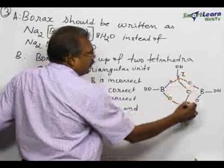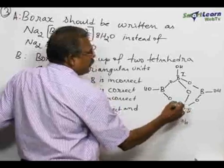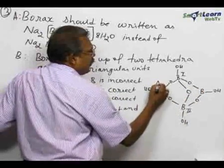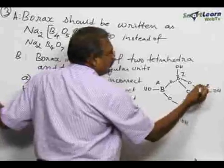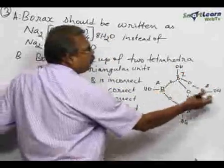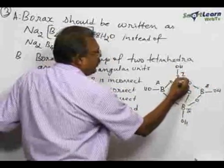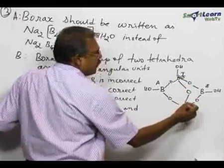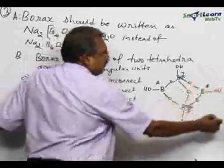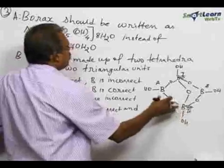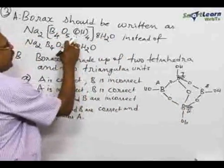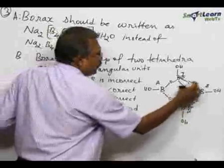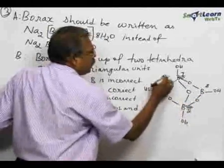So this is the first tetrahedral unit, the second tetrahedral unit and these other two are triangular unit, this triangular unit A and triangular unit B. So two tetrahedra and two triangles and this B is having the negative charge B minus, this is also having negative charge and this the entire thing is coming under what is called this formula B4O5(OH)4, B4O5(OH)4. B 1, 2, 3, 4 and OH 1, 2, 3, 4.